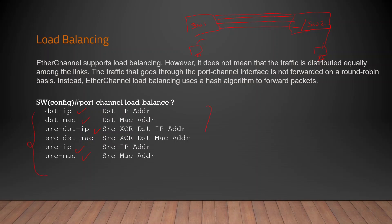The last point is bandwidth aggregation. For example, you can use 4x10G links to get 40G total capacity. At a time, you can use the combined bandwidth. When you use the interface, it appears as a single logical interface.